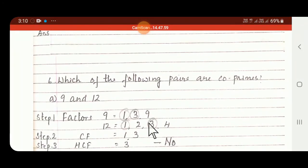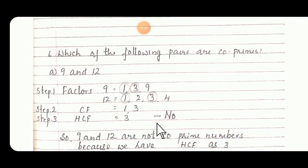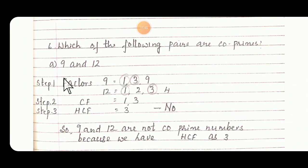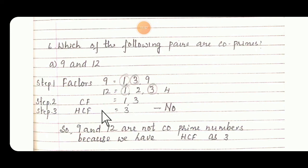Question number 6: Which of the following pairs are co-prime? A: 9 and 12. Factors of 9 are 1, 3, and 9. Factors of 12 are 1, 2, 3, and 4. So common factors are 1 and 3. HCF — the biggest one — is 3. So it is not a co-prime number. 9 and 12 are not co-prime numbers because we have HCF as 3. If we have HCF as 1, that is called a co-prime number.